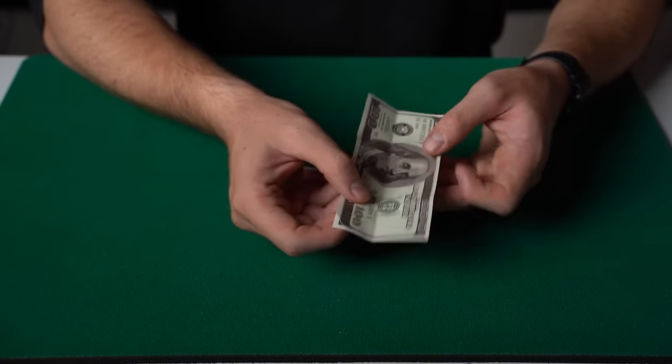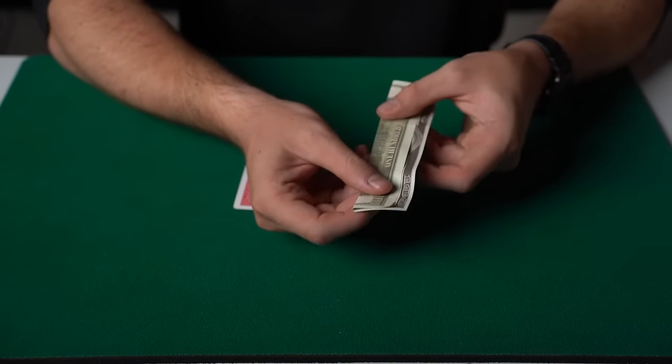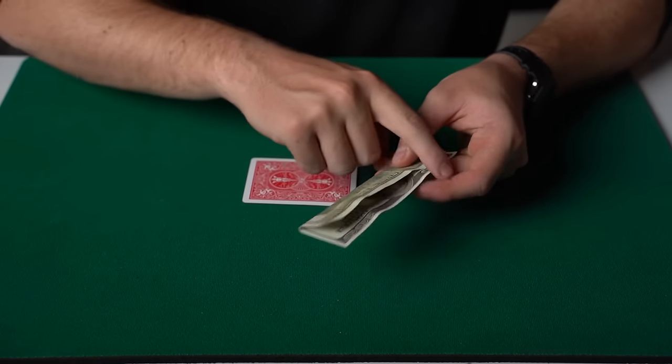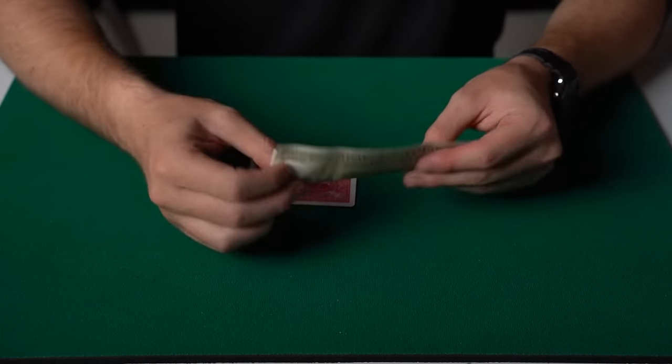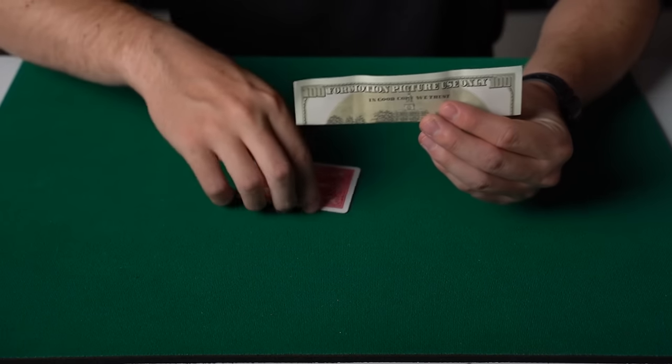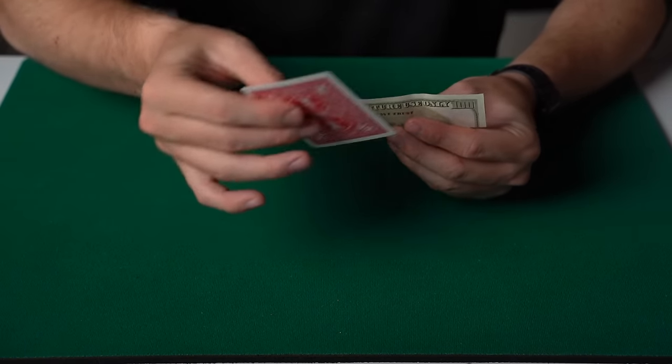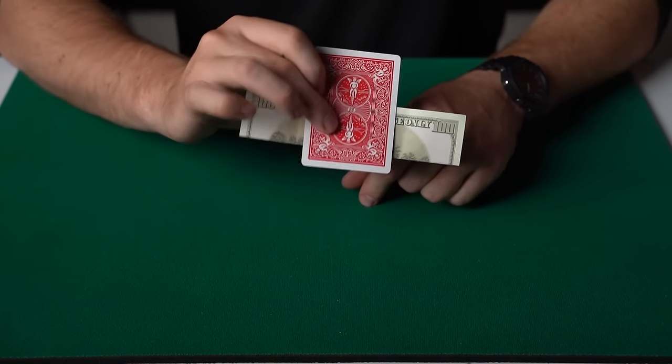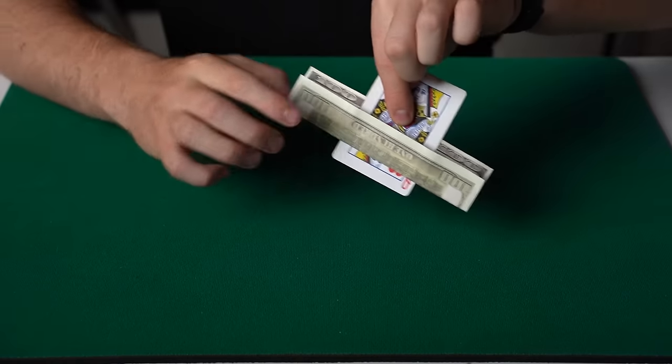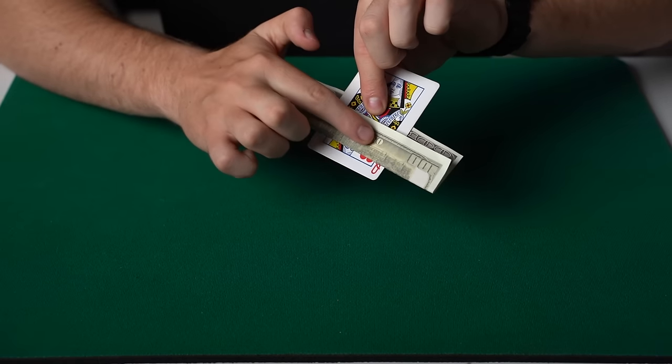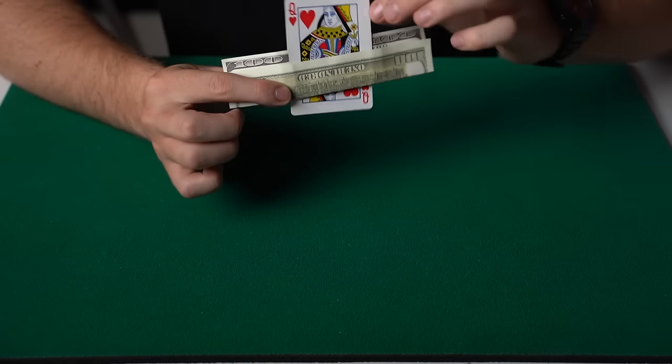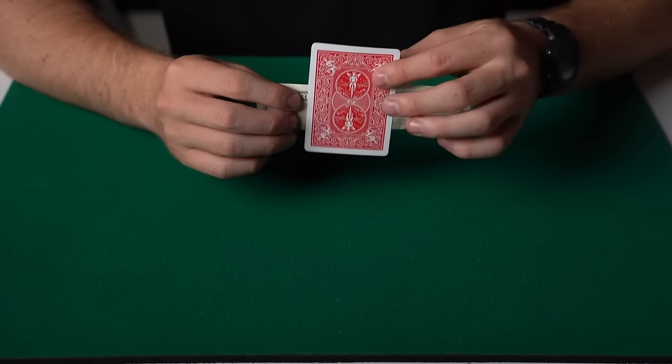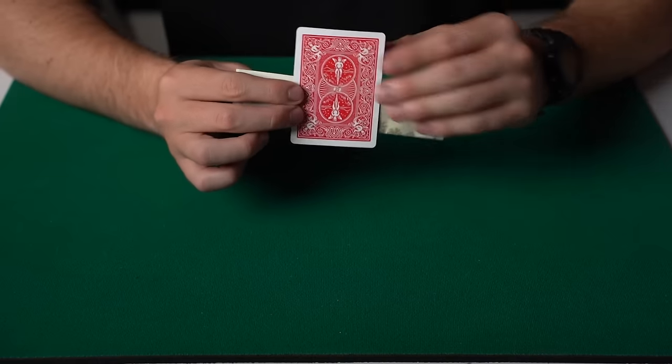Then what you're going to do is you're going to fold the bill not in half, but three quarters of the way like this. And you want the higher side of the bill facing towards the spectator. And you're going to place the playing card, what looks like from the front, just in front of the bill. But when you flip it around, what you've actually done is place the flap through the bill like this. So that's what it looks like from the front. But from the back, it looks like you're just placing the playing card over the back of the bill.